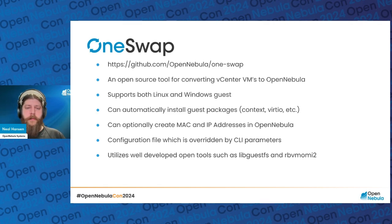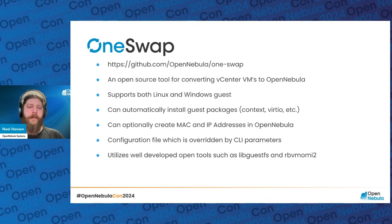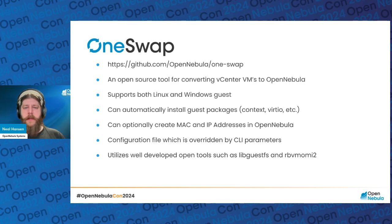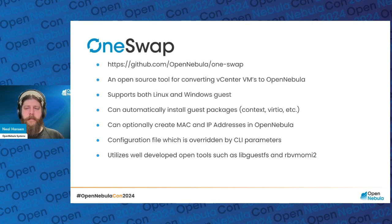You can see the link here to the public repository where you can access it right now and get cutting-edge updates. Any new releases will be there as well. Since it's an open source tool, we welcome bug reports and new feature requests in the issues area. There's also a full wiki describing how to use it, prerequisites, and everything like that. It's a fully open source tool for converting vCenter VMs over to OpenNebula with relatively little input.